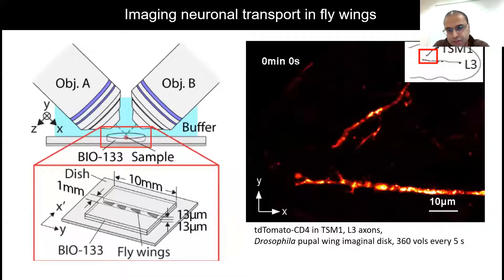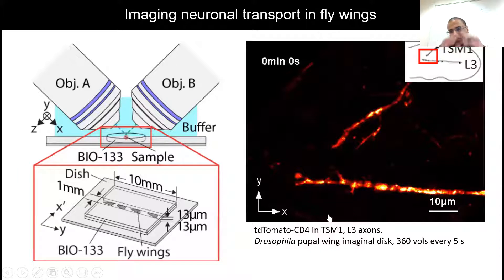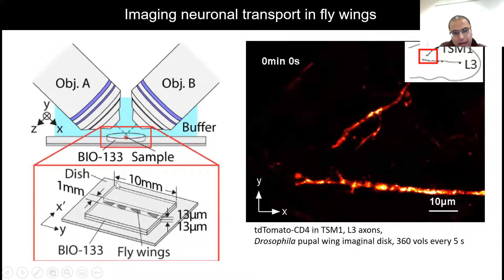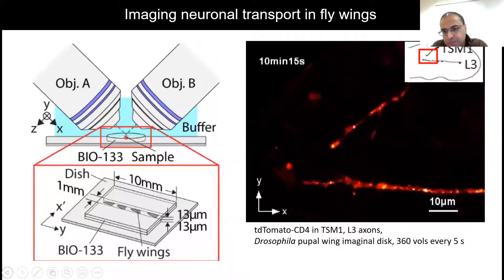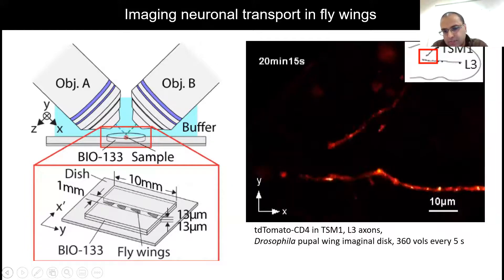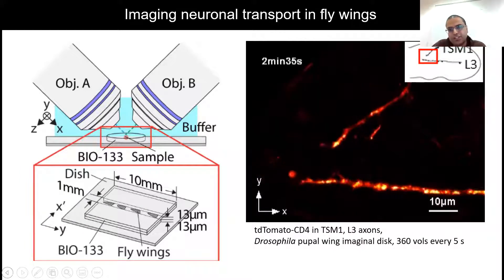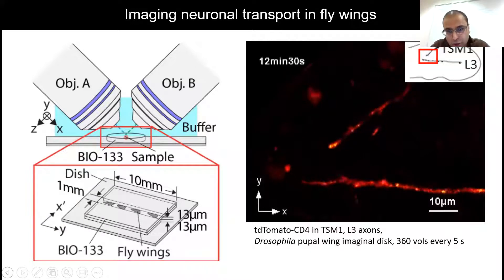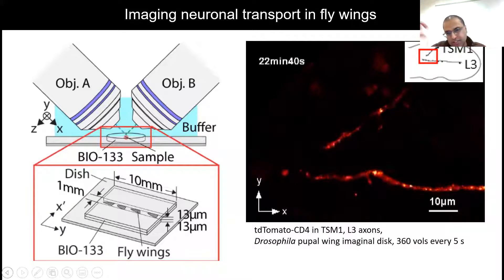Some of our collaborators image Drosophila imaginal disc, specifically pioneer neurons in TSM1 and L3. They usually image in a spinning disc but can't image for very long due to volumetric bleaching. To immobilize these wings in the Diaspim, we made a very simple immobilization setup: polymerized slabs of Bio-133 with spacers about 13 microns thick, arranged the wings in a row, and put another slab over them. We can then image for hundreds of volumes without noticeable photobleaching, observing dynamics of membrane signals in these two axons.